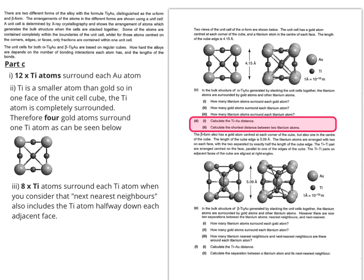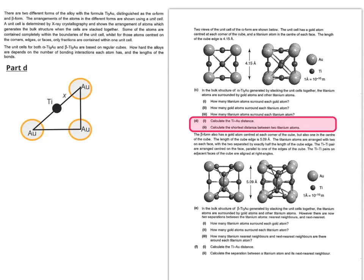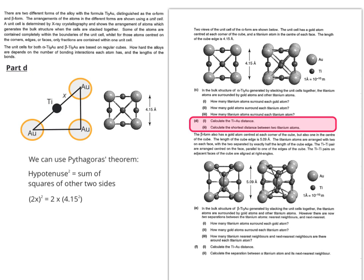We're now going to do part D, which takes a bit of calculating this time rather than visualising the positions of atoms. The next part asks us to consider the distance between a titanium and a gold—we assume that means between the nucleus of the titanium and the nucleus of the gold. If you look at a titanium atom, it sits on the centre of a face, which means you can use Pythagoras' theorem to work it out. The hypotenuse, which is the longest part of the triangle, squared equals the sum of the squares of the two sides. So 2x squared equals 2 times 4.15 squared. Working it through, you end up with x equals 2.93 angstroms.